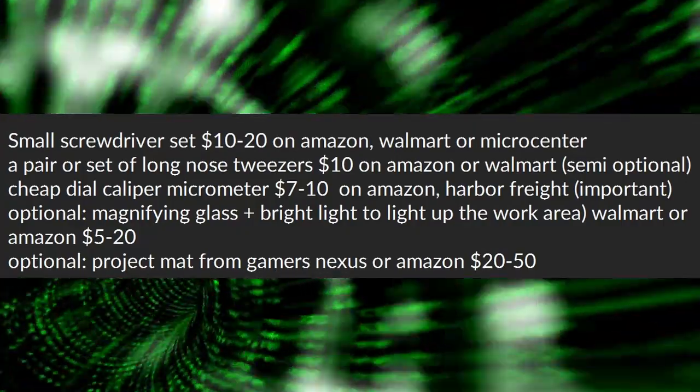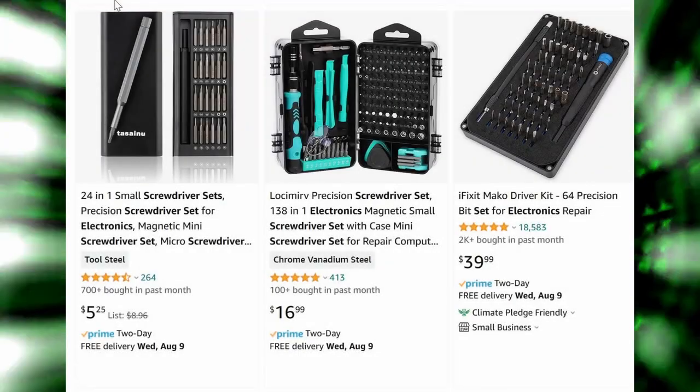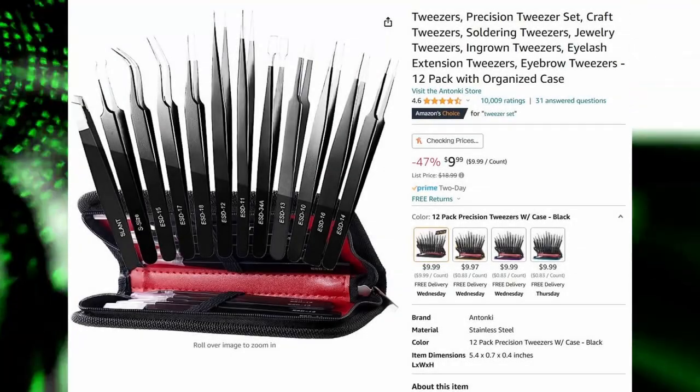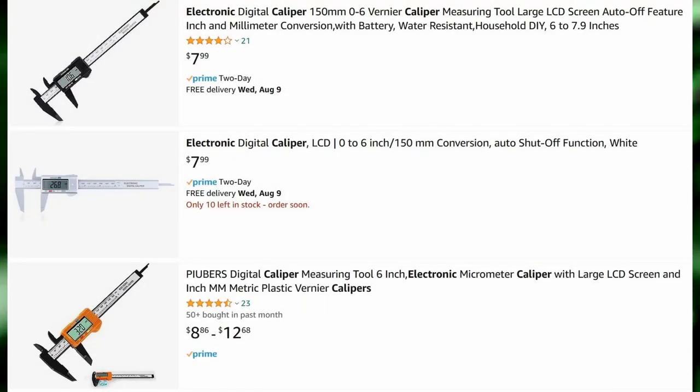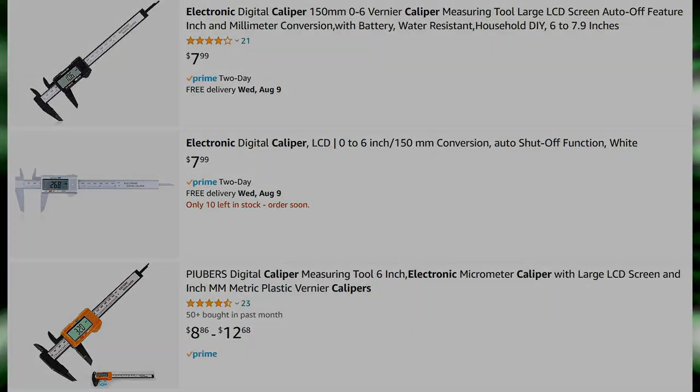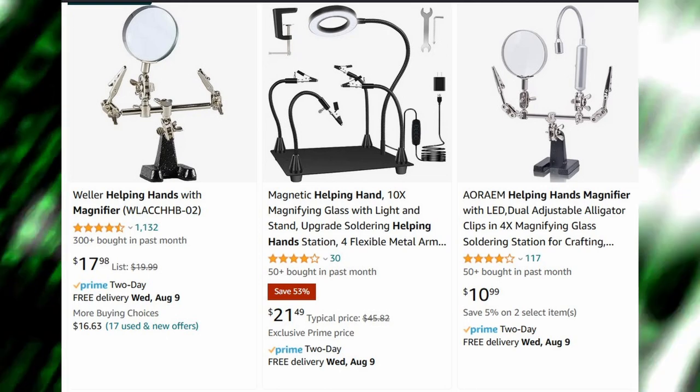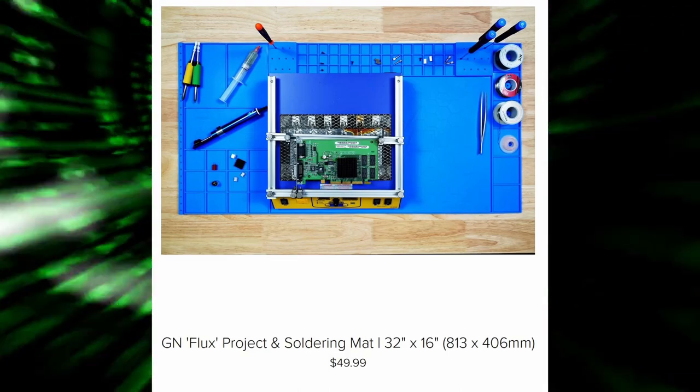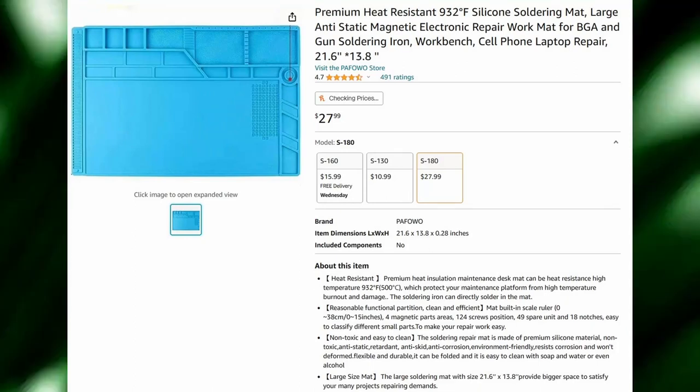So here's the things that you're going to need to get started with. You probably can get by with what you already have, but these are the things that I used and I would recommend to make the project easier. So you're firstly going to need a small screwdriver set that'll run you about 10 to $20 on Amazon, Walmart, or Micro Center. A pair of long nose tweezers or a set that'll run you about 10 bucks on Amazon or Walmart. And most importantly, you're going to need a cheap dial caliper or micrometer and those will run you about 7 to 10 bucks on Amazon or Harbor Freight. And then optional is going to be a magnifying glass and a bright light and that's going to help you be able to see what you're working on. And then the last optional is going to be something like a project mat from either Gamers Nexus or something like that. That way you have a spot to put all your screws and keep everything organized and just make it much easier to know where things go.